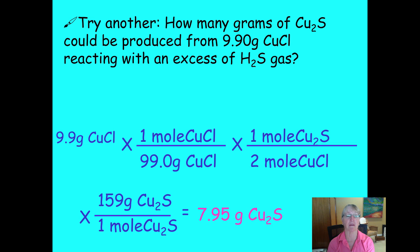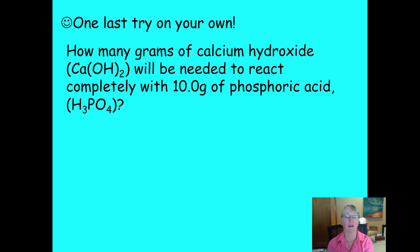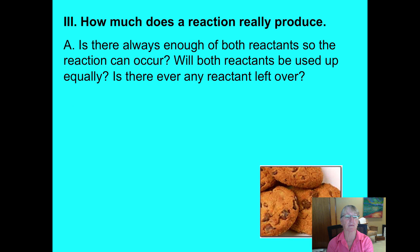You should end up with 7.95 grams of copper sulfide. The three sources are: the molar mass of the first substance from the periodic table, the molar ratio from the balanced equation, and the molar mass of the product again from the periodic table. All units cancel to leave grams of the substance you were solving for. For practice, set up this problem on your own: calcium hydroxide reacting with phosphoric acid. I'll stop there until next time.